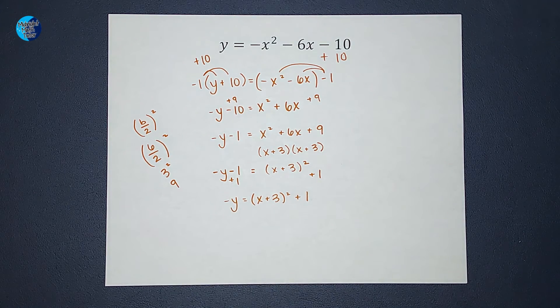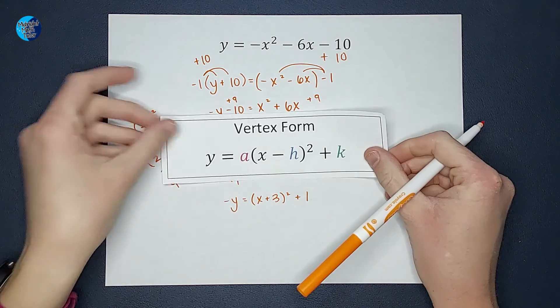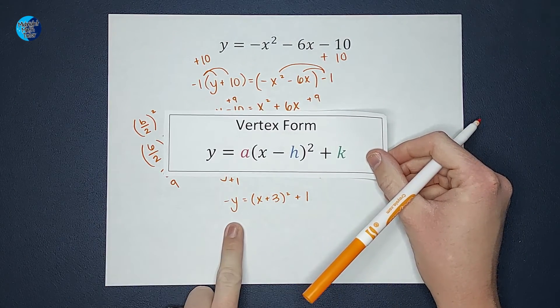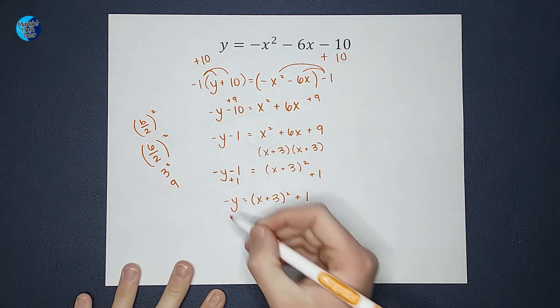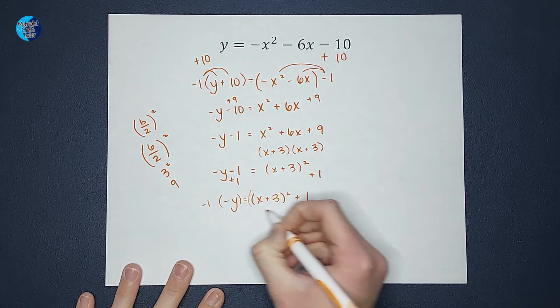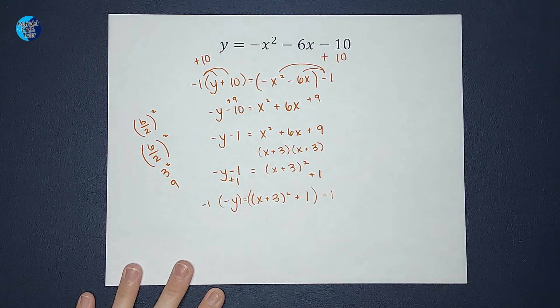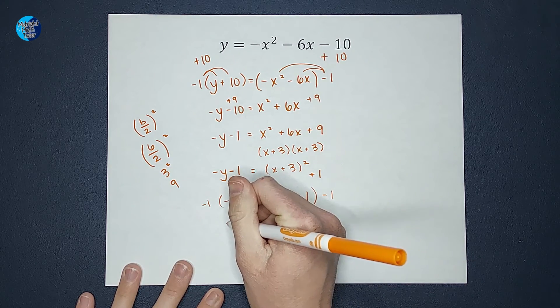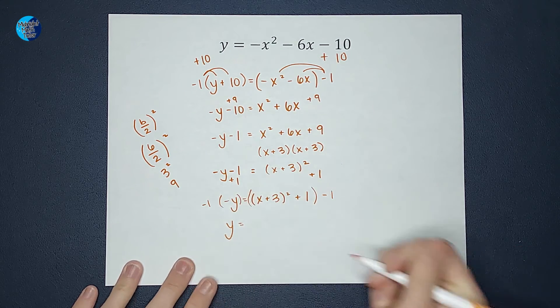And you might be tempted to say I'm done, but we don't want our y to be negative. So I am going to again multiply both sides by a negative 1. And I end up with a positive y over here, which is what I wanted.